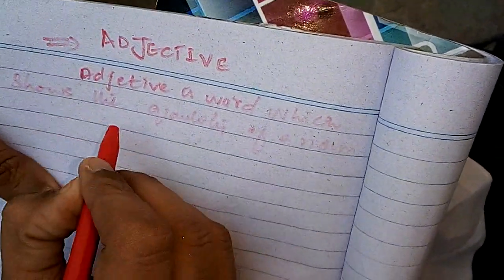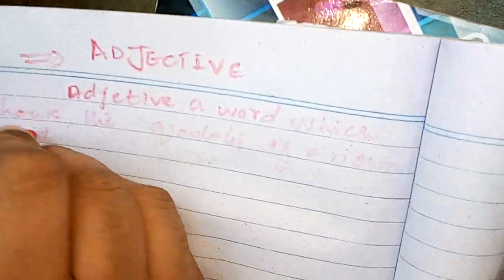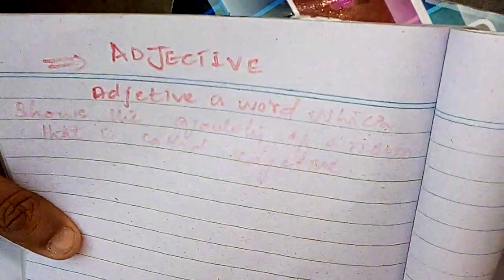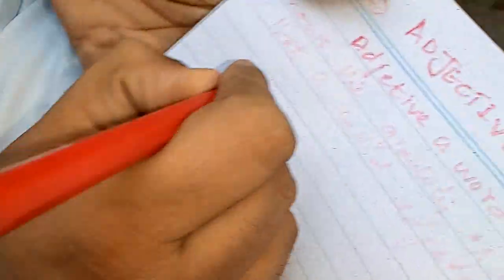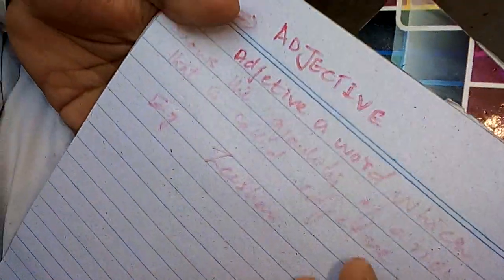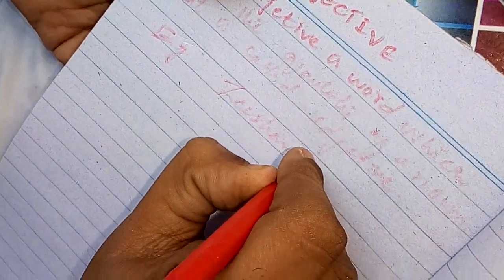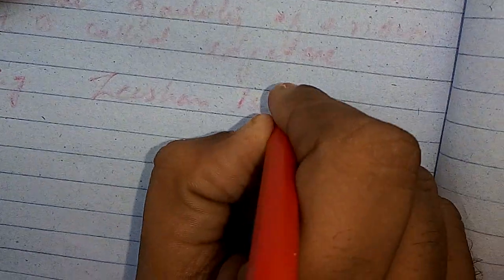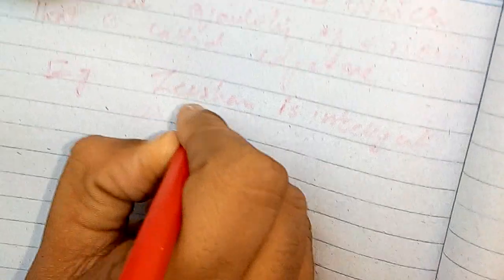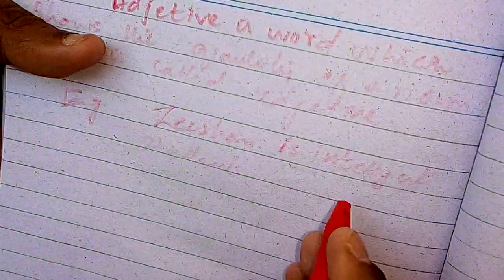Adjective is a word which shows the quality of noun — that is called adjective. This is a simple definition of adjective. For example, 'Zeeshan is an intelligent student.' Here, 'intelligent' is an adjective.